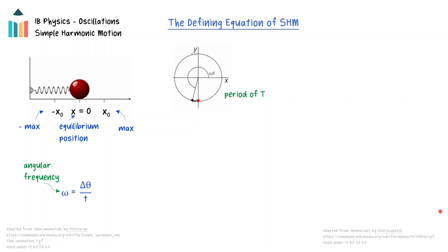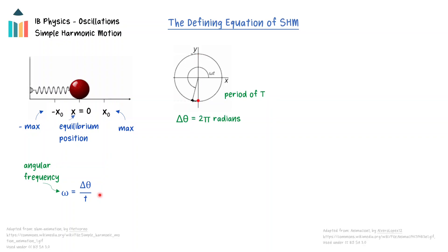The angular frequency is the rate of angular displacement and is given by the symbol omega. Omega is equal to the change in angle divided by the time. In circular motion, the mass completes one full circle of two pi radians in one period. Using the relationship for the angular frequency, omega for a mass undergoing simple harmonic motion is 2 pi divided by the period.